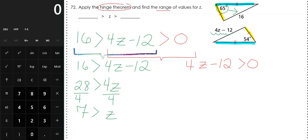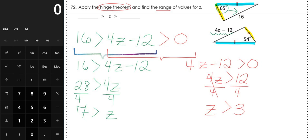Solving the right side: 4Z minus 12 is greater than 0. Add 12 to both sides to get 4Z is greater than 12, then divide by 4, so Z is greater than 3. As long as Z is larger than 3, your side length will be larger than zero. Putting these together, the final answer is 3 less than Z less than 7 — Z can't equal 7 and can't equal 3. This is an application of the Hinge Theorem.